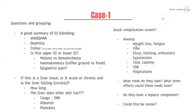Do a quick complication screen. Ask about anemia — this patient would have lost blood because of an upper GI bleed. Talk about weight loss, fatigue, and pallor. Have they felt dizzy or faint? Check for orthostatic hypotension. Are they cold or clammy? Shortness of breath and palpitations are more severe complications.